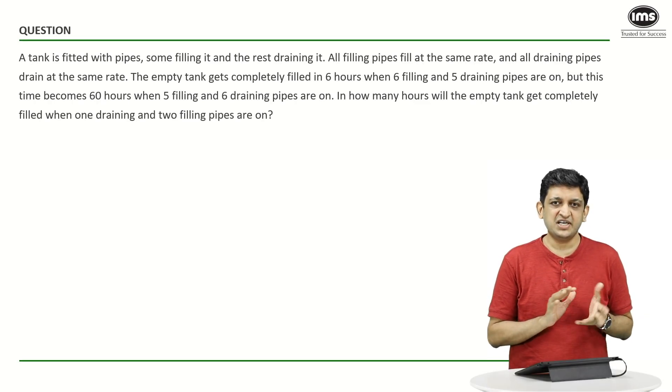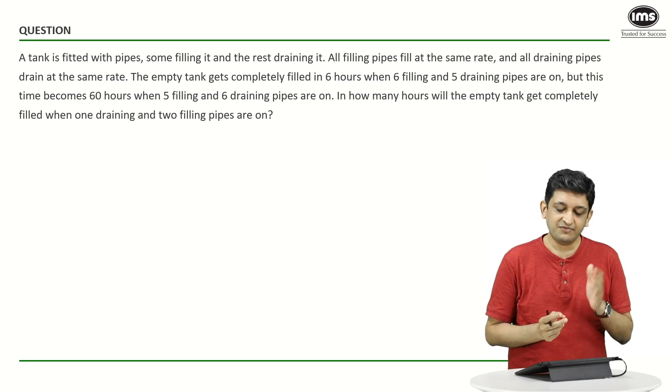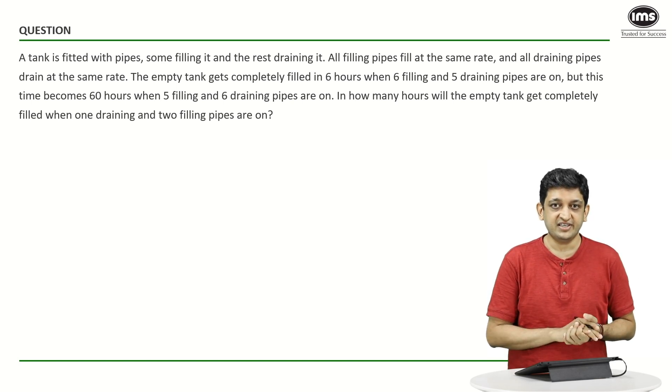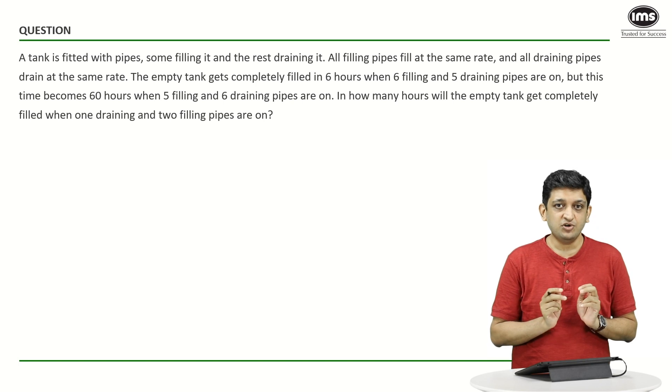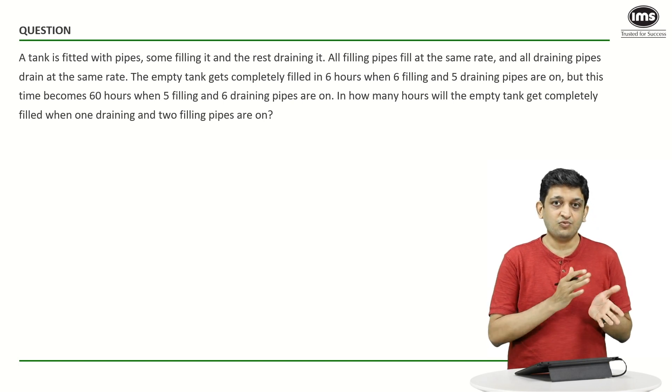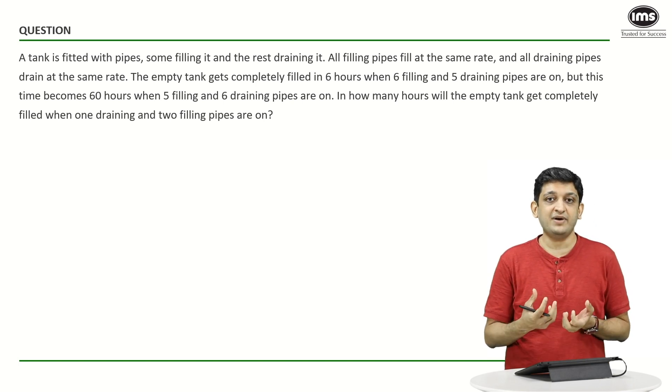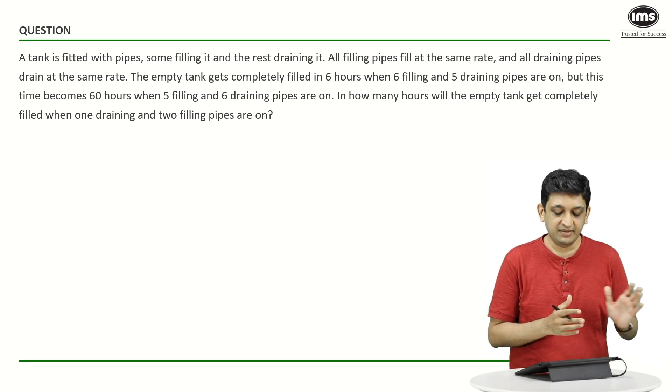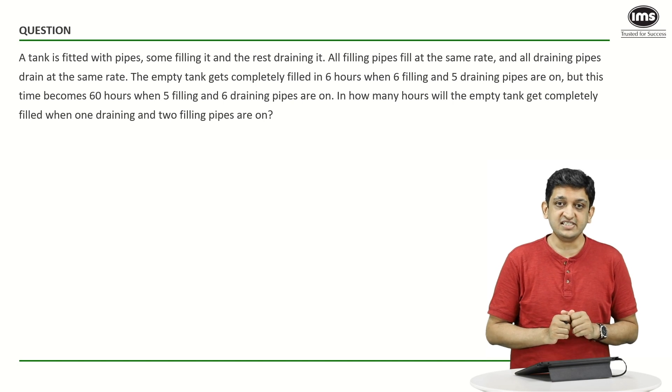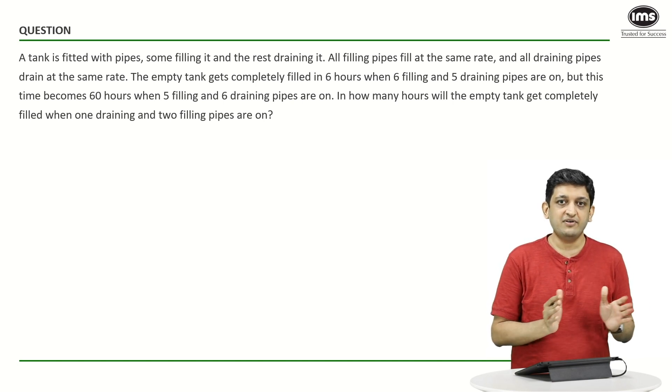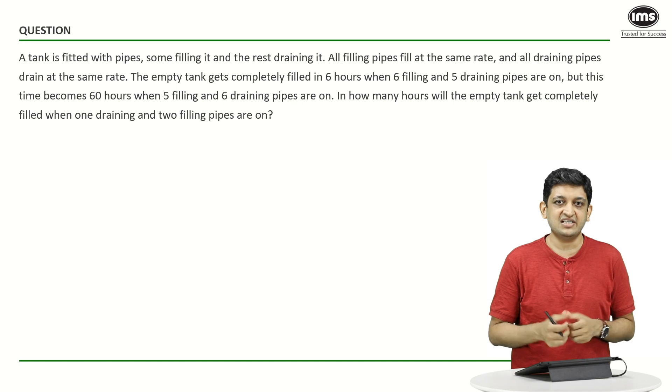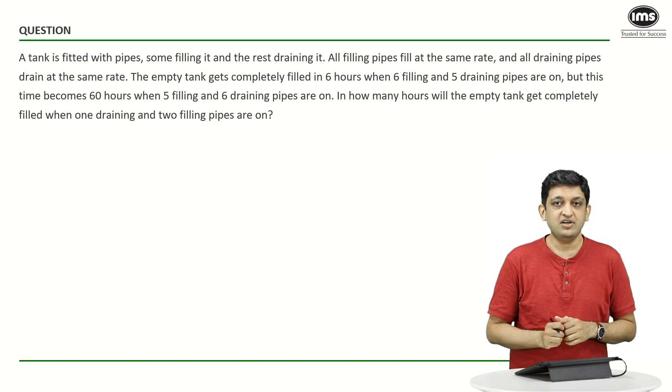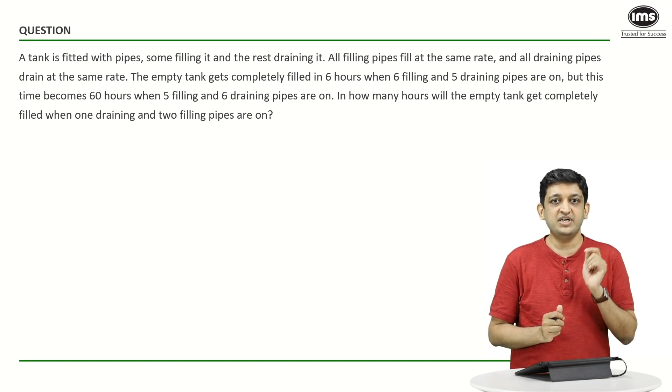In this question, we have a tank that is fitted with a lot of pipes. Some of them are filling it, the rest of them are draining it. We have been given two scenarios in which we can see what is happening if there is a certain number of pipes that are filling this tank and there are a certain number of pipes that are emptying this particular tank. So, let us look at these two cases. First, let us look at the longer way of solving things using equations and larger numbers, and then let us have a look at understanding it using the unitary approach.